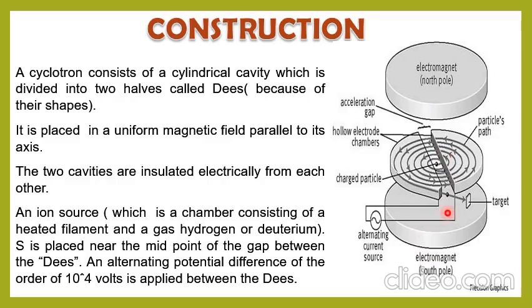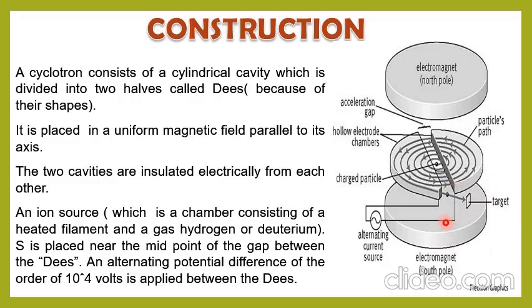At the center of the D's we place a source of charged particles, and we place the D's between two electromagnet poles — these electromagnets are also cylindrical in shape with radius larger than that of the D's. We connect the D's with one alternating current source having a certain constant frequency and constant voltage. There is also an ejection window inside the D by which we can eject the particle, and we place a target where we direct the beam.